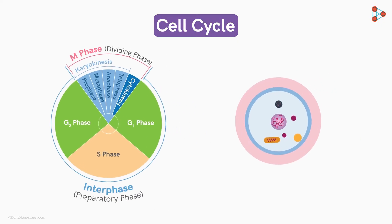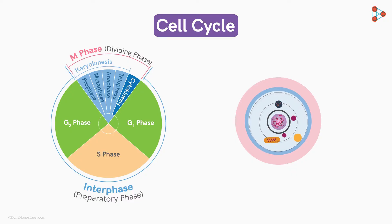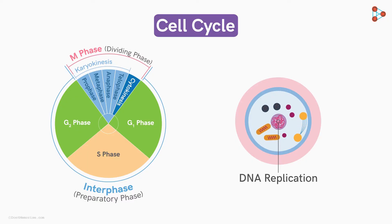This cell goes through three phases — G1 phase, S phase, and G2 phase — in order to grow and prepare itself for the actual division. The DNA is replicated to make an identical copy of each chromosome. Other organelles of the cell also get duplicated in this complete phase.